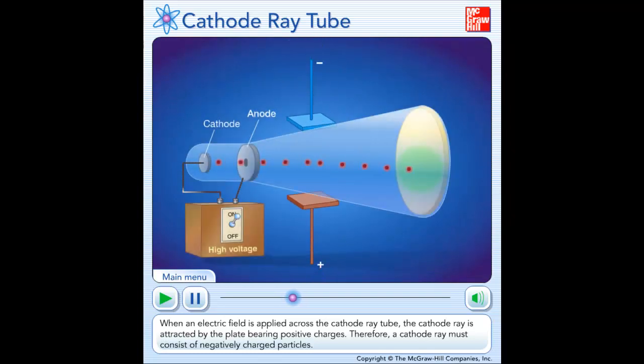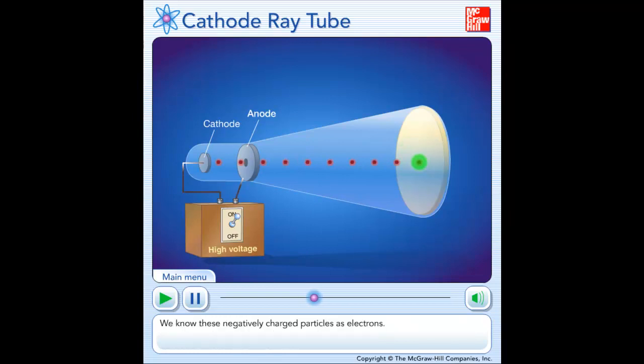When an electric field is applied across the cathode ray tube, the cathode ray is attracted by the plate bearing positive charges. Therefore, a cathode ray must consist of negatively charged particles. We know these negatively charged particles as electrons.